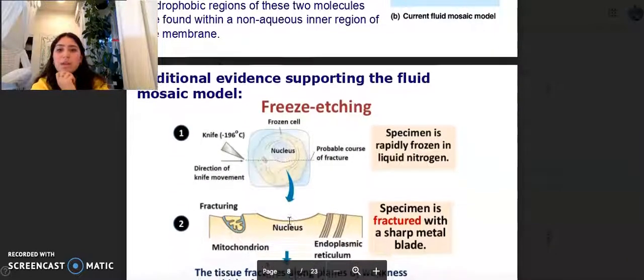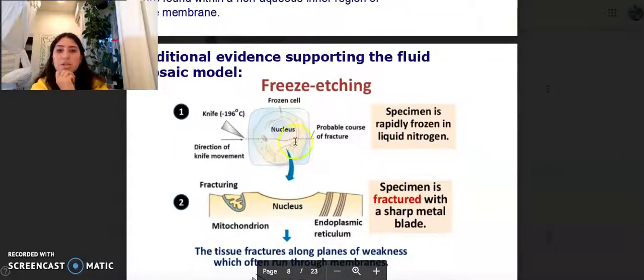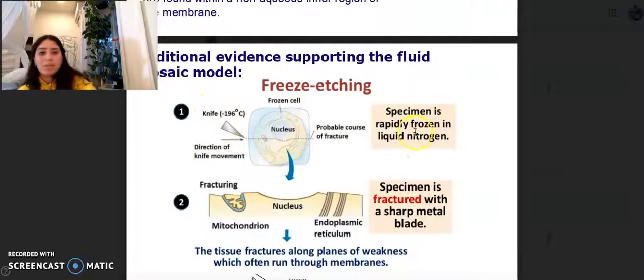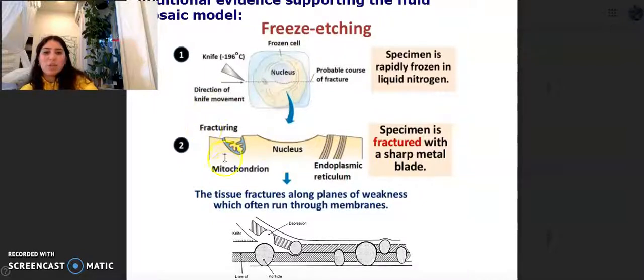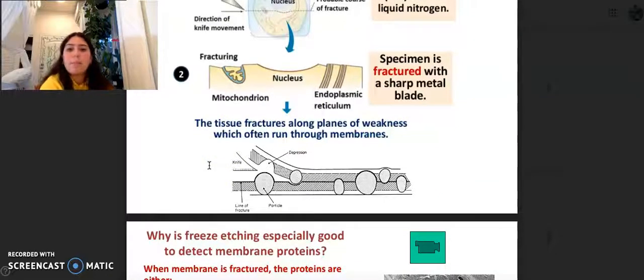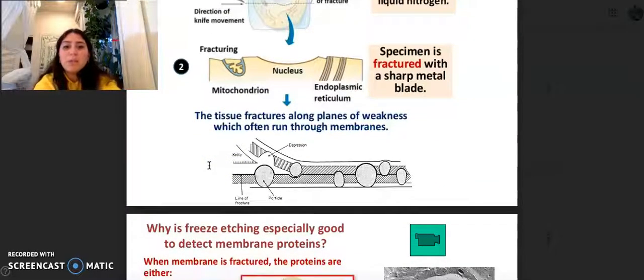Additional evidence supporting the fluid mosaic model is freeze etching. They took a cell. Here's the nucleus. Here's the probable course of fracture, the knife and the direction of knife movement. The specimen is rapidly frozen in liquid nitrogen. Number two, here's the mitochondrion nucleus. Specimen is fractured with a sharp metal blade. And then the tissue fractures along planes of membranes, which are weaknesses, which often run through membranes.